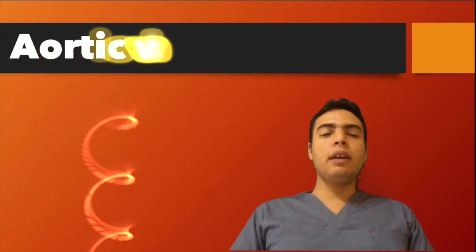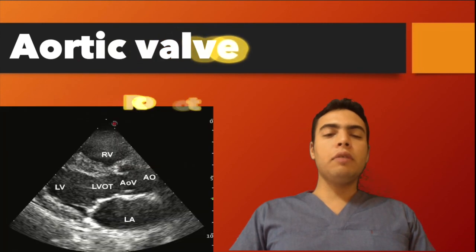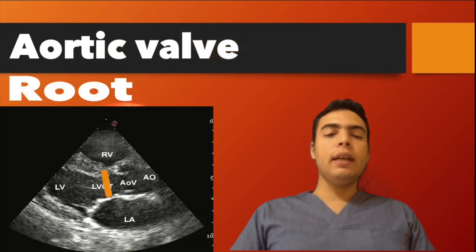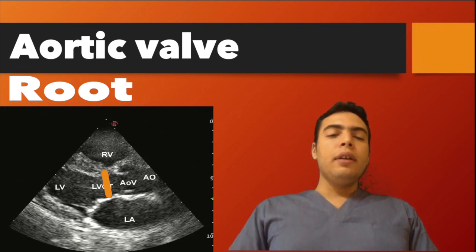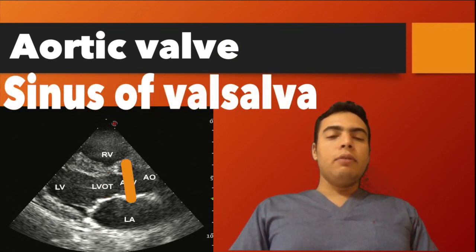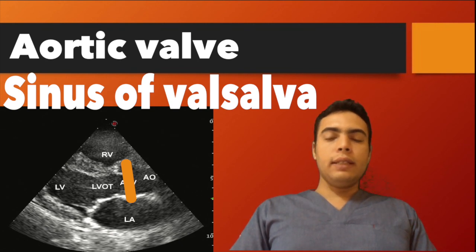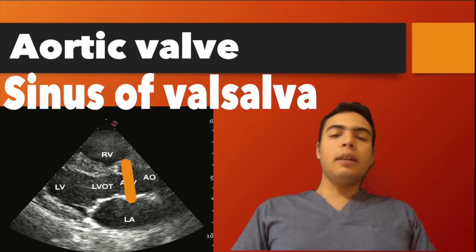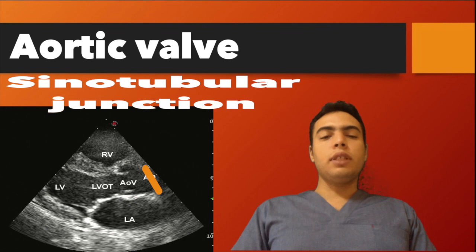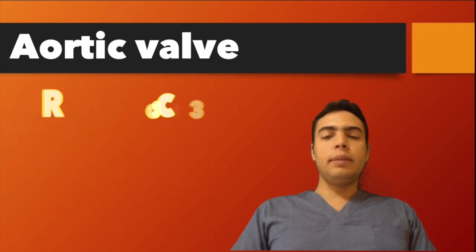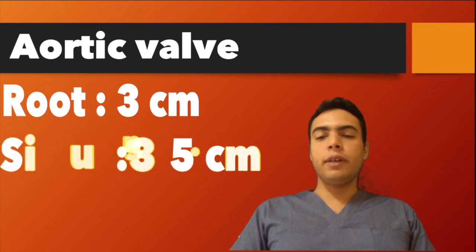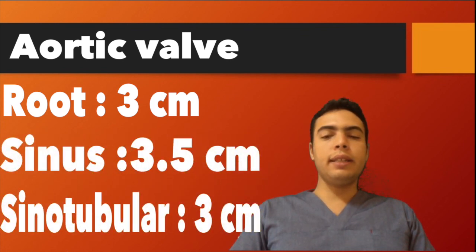For aortic valve assessment, we measure the LVOT diameter, then the sinus of Valsalva, and then the sinotubular junction. Normal values: the aortic valve diameter at LVOT should be about 3 cm, the sinus of Valsalva should be 3.5 cm, and the sinotubular junction is measured at its respective level.